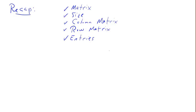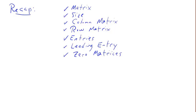Finally, let's do a quick recap of what we covered in this video. We covered the definition of a matrix, the size of a matrix, what a column matrix is, row matrix, the entries of a matrix, the leading entry of each row, zero matrices, diagonal entries of a matrix, what the main diagonal is, square matrices, the identity matrices, linear relationships, and finally we just touched on matrix algebra.